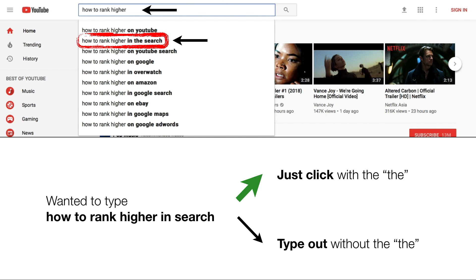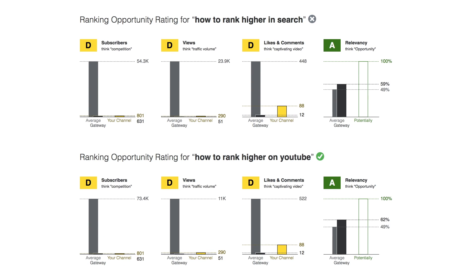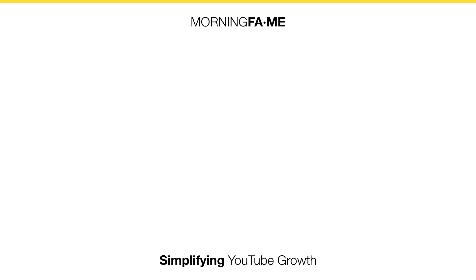To help you with that, I baked that into Morning Fame's keyword research tool. When you do a search you can easily see if the keyword appears in the search bar suggestions. How to rank higher in search gets the grey cross; how to rank higher on YouTube gets the green check. Now it's pretty clear which keyword to target. The search bar suggestions are really powerful from a search volume perspective — they don't give us exact numbers, but this information comes directly from the source, YouTube. Thus the suggestions are very dependable. Cheers, my friends!